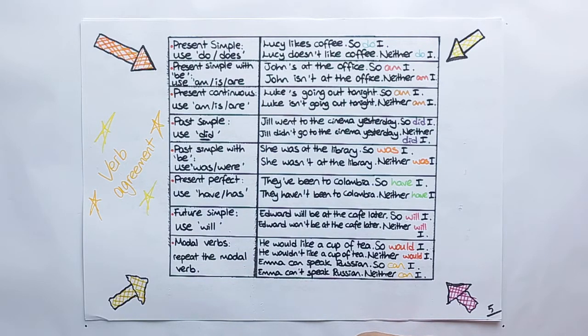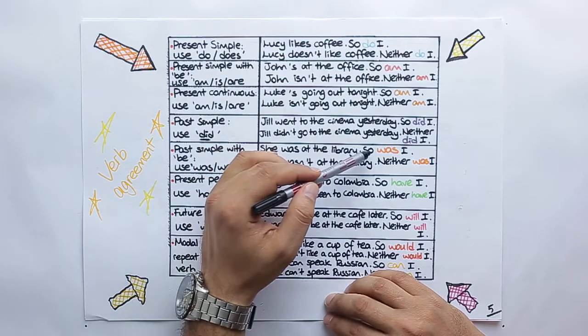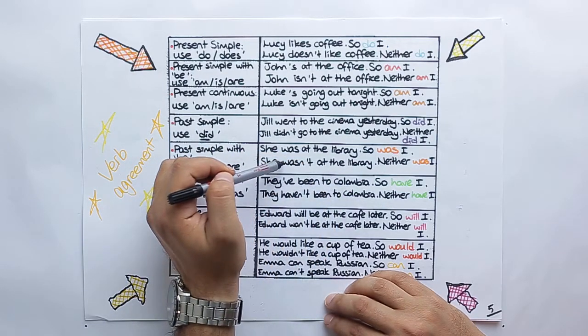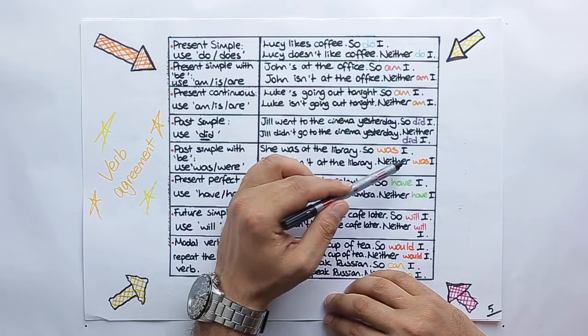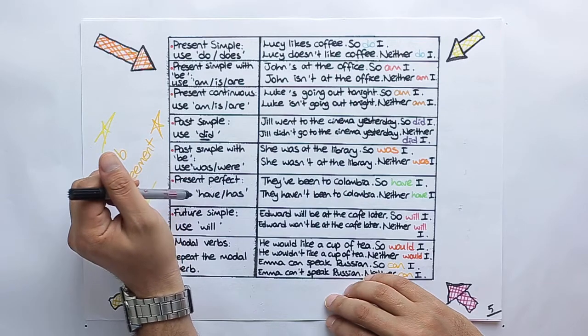Past simple with was, were, with to be form. She was at the library, so was I. She was not at the library, neither was I. For present perfect form, use have or has.